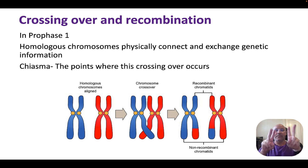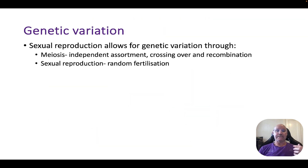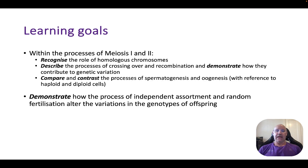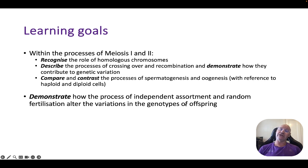So those three processes — independent assortment, crossing over and recombination, and random fertilisation — are what creates nearly all of the variation in sexual reproduction. There's also the process of mutations, which we'll talk about later. Going back to the learning goals: we've covered homologous chromosomes, crossing over and recombination contributing to genetic variation, and how independent assortment and random fertilisation alter the variation of genotypes in offspring. Spermatogenesis and oogenesis will be covered in the next video.